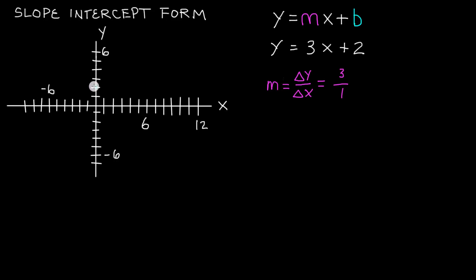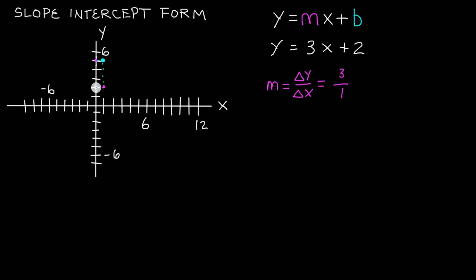We have our b marked now, so we can go up 3 units in the y direction from our point on the line — up 1, 2, 3 units in the y direction. That point isn't yet on our line, but it shows how many units we change in the y direction. For every 3 units in the y direction, we also need to change 1 unit in the x direction. Coming off that same point, we go over 1 unit in the x direction. Going straight up and then 1 straight over, you can see where those 2 projections cross — that's going to be another point on the line.